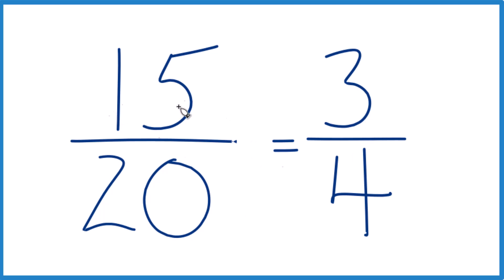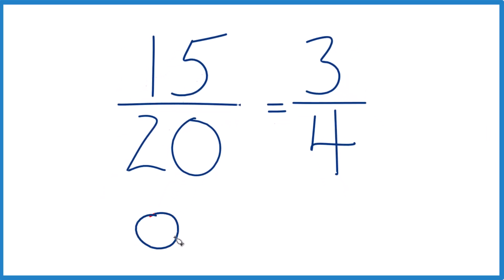If you divide 15 by 20, you get 0.75. If you divide 3 by 4, you get 0.75. That's because they're equivalent fractions.